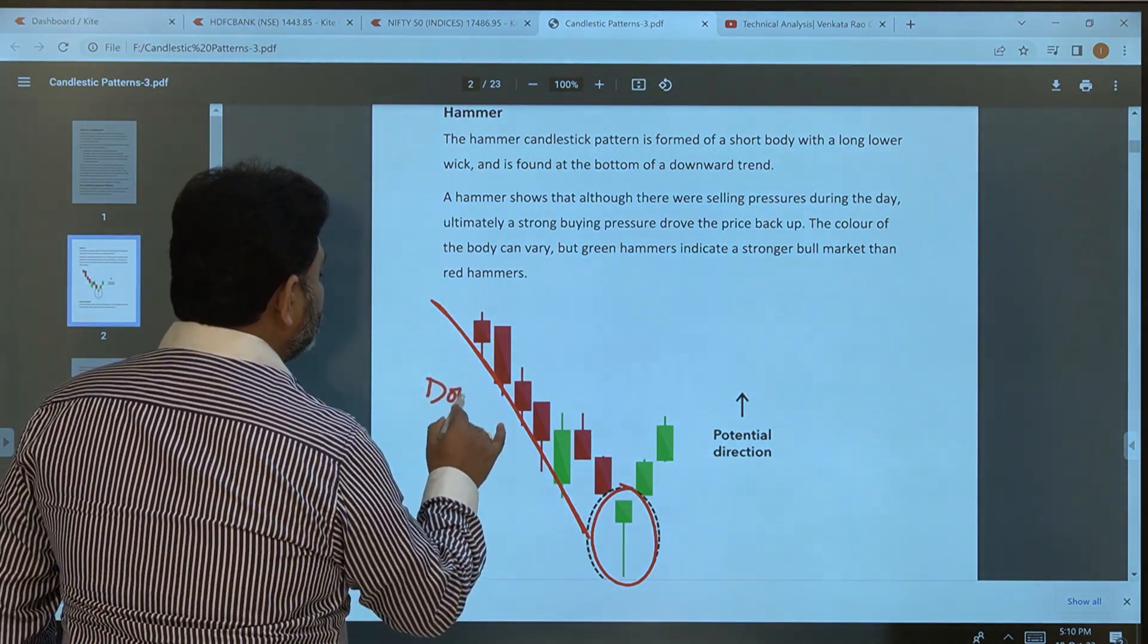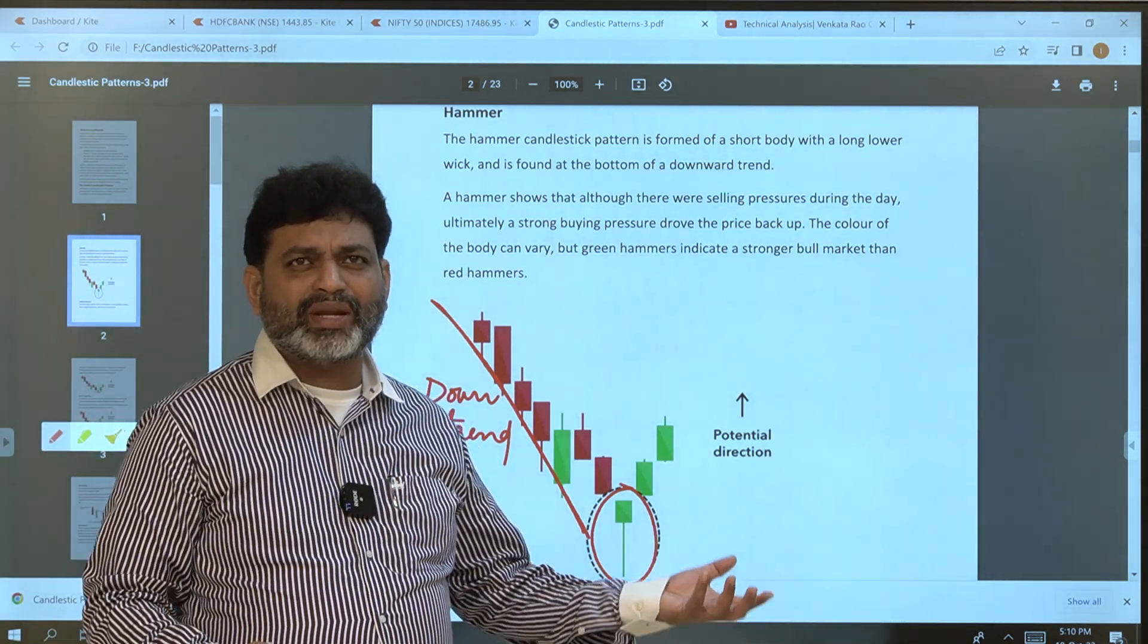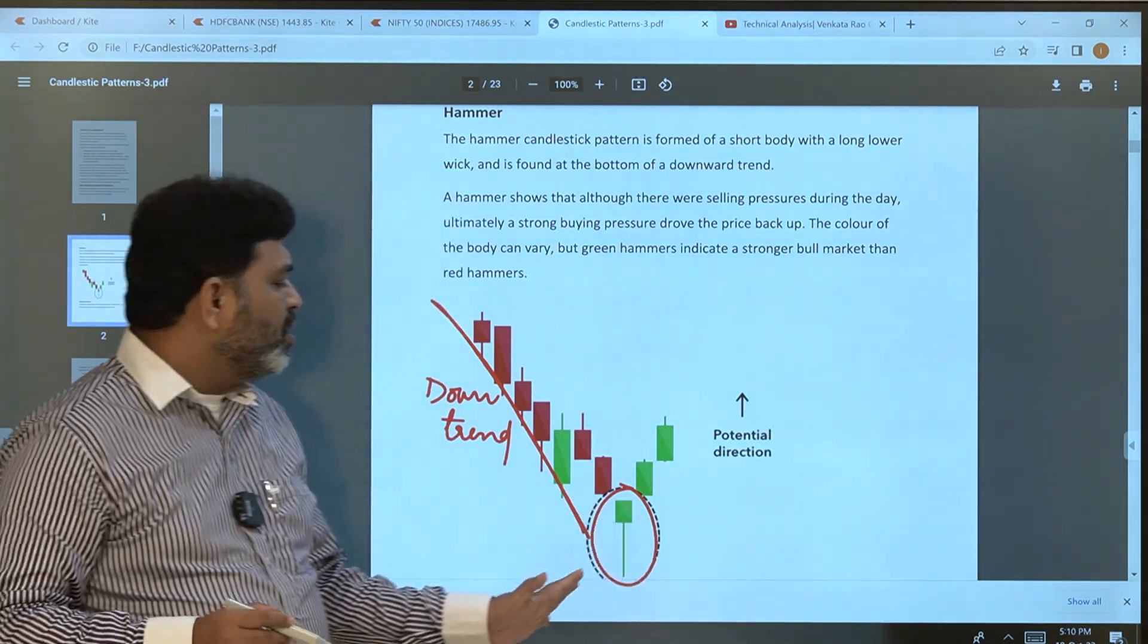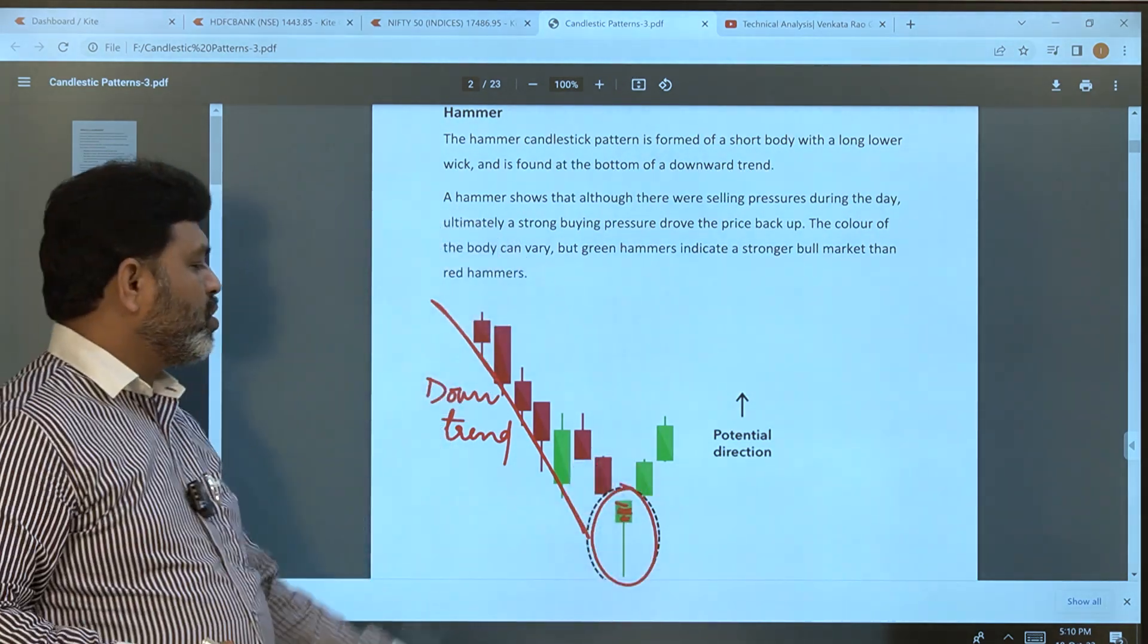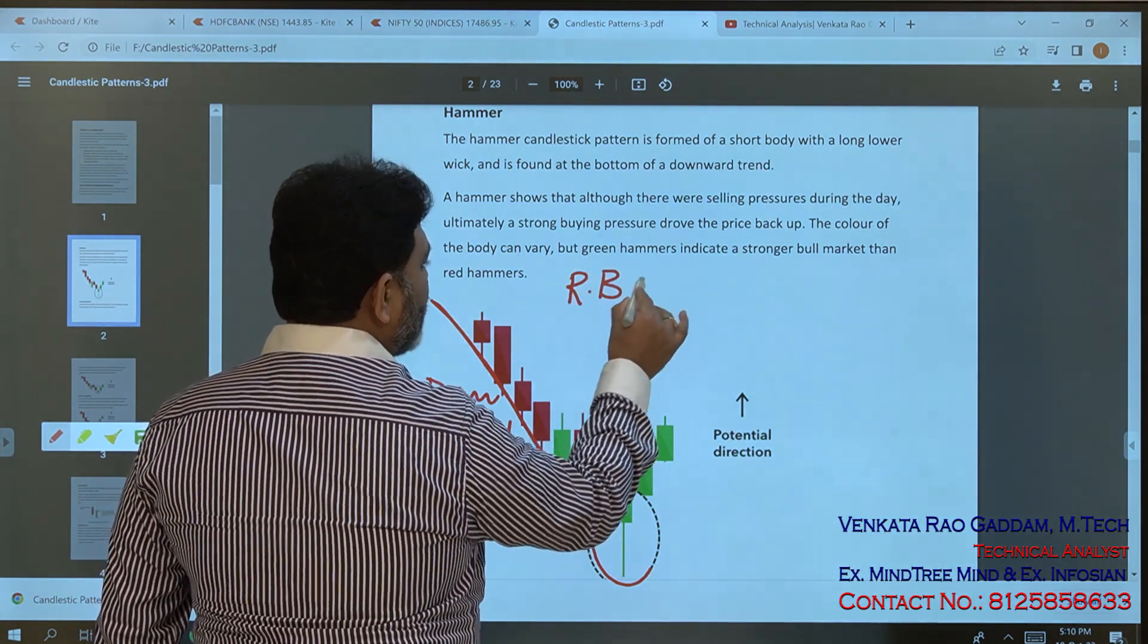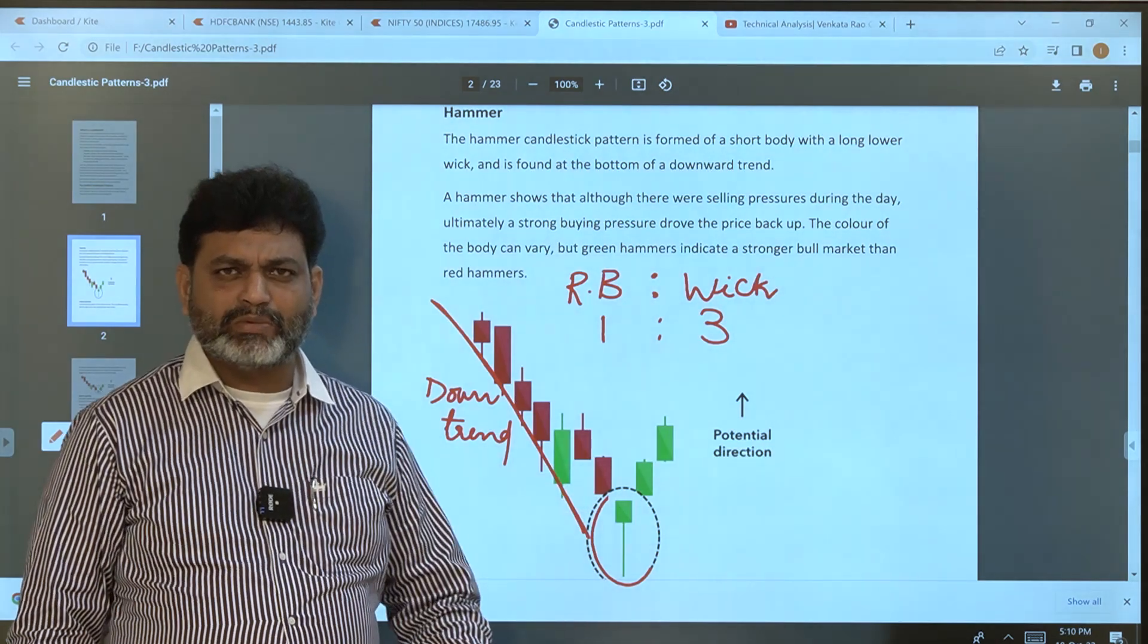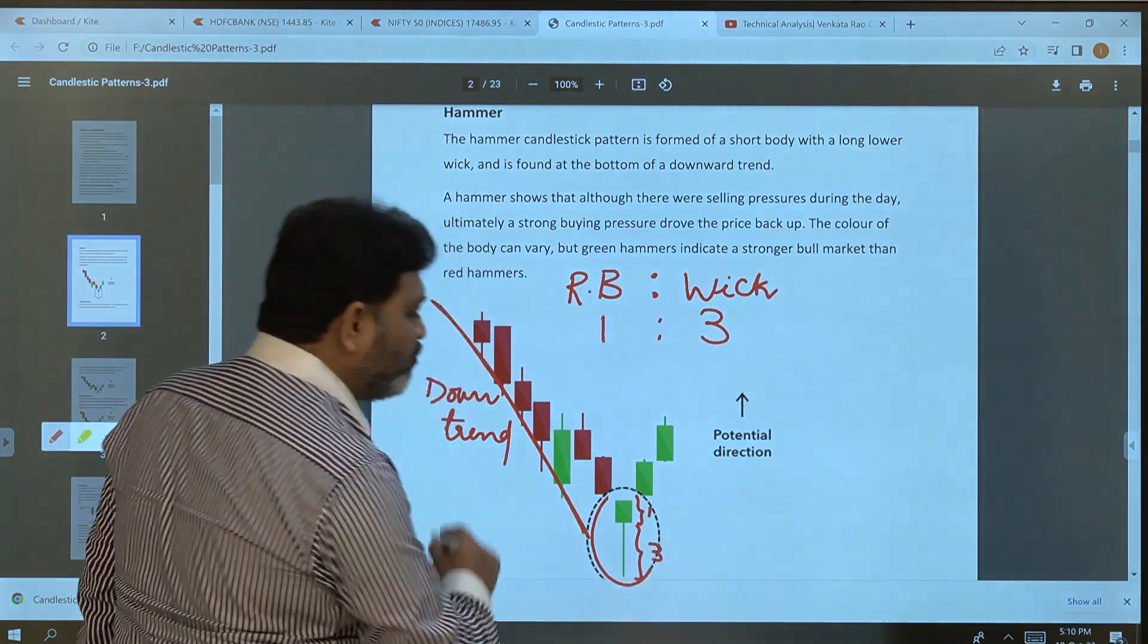The first requirement is there should be a downtrend. We should identify bullish patterns in a downtrend. The hammer is a buying opportunity, a bullish pattern. The hammer looks like this - it has a long bottom wick compared to the real body. In terms of ratio, suppose the real body is one time, the wick should be at least three times, it can be four times, five times, six times - no problem. Minimum, the real body is one time and the bottom wick is three times.